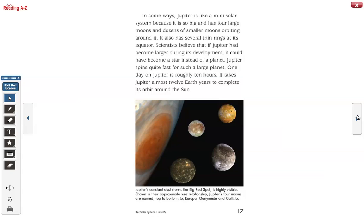Jupiter spins quite fast for such a large planet. One day on Jupiter is roughly 10 hours. It takes Jupiter almost 12 Earth years to complete its orbit around the Sun.